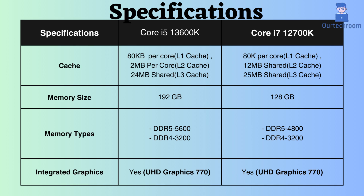The L1 and L3 cache sizes of both processors are similar. However, the L2 cache for the Core i5-13600K is 2 MB per core, indicating that each processing core has its own dedicated 2 MB L2 cache. In contrast, the Core i7-12700K has a shared L2 cache of 24 MB for all cores.